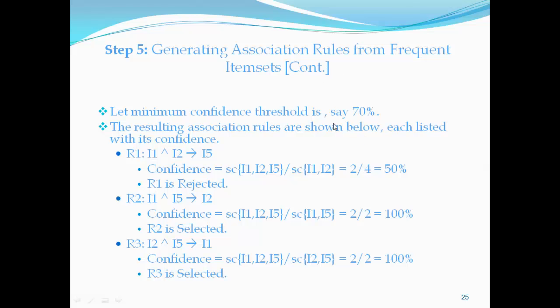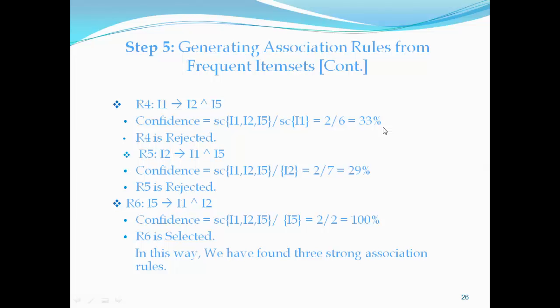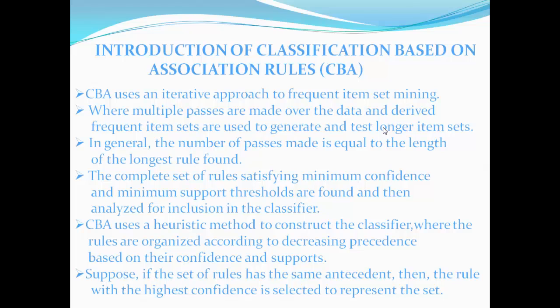In these association rules, the confidence level when it is low, then the rule is being rejected. When the confidence level is more, then the rule is being selected. Similarly, till the ending, the rules which are being selected form the strong association rules. Now I will give to my friend Sonam for introduction of the classification.